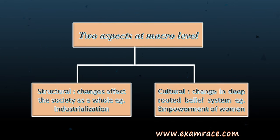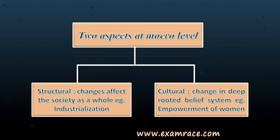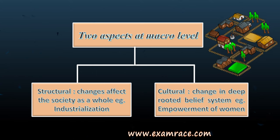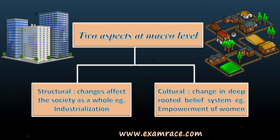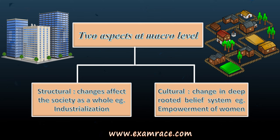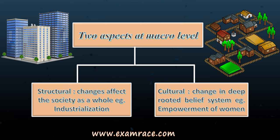There are two aspects of social change at the macro level — how changes affect society as a whole. There are two kinds of changes: structural and cultural. For structural change, take the example of industrialization. Before industrialization, society was very simple. After industrialization, we became more consumer-oriented, more profit-oriented, with a certain standard of living. These structural changes affect society as a whole — they do not just target some members and leave others.